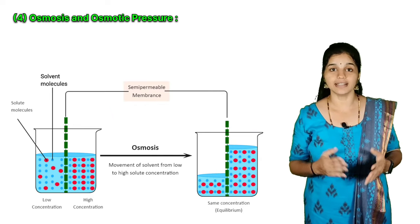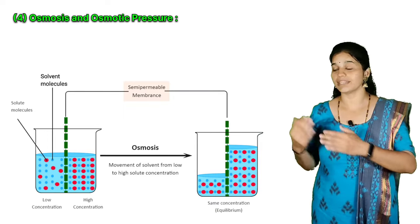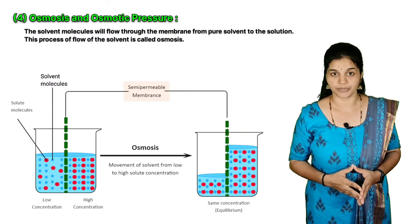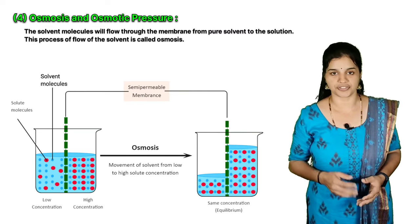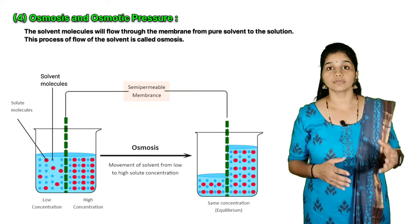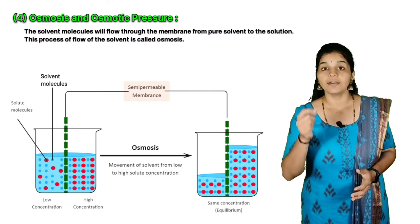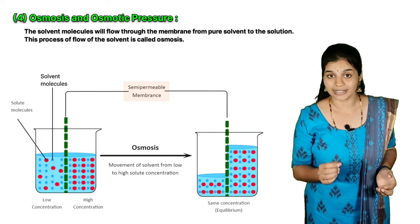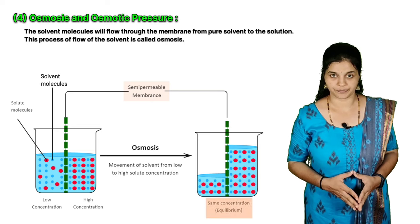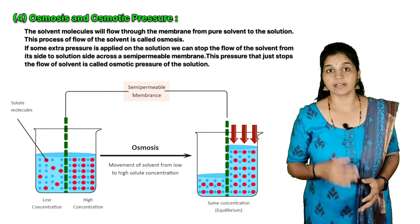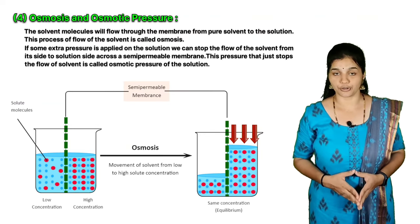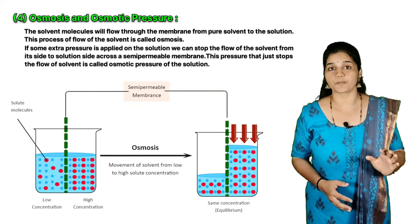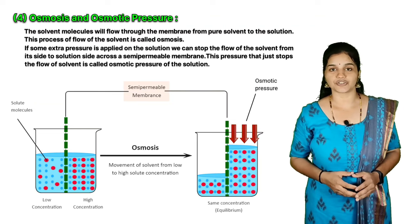Semi-permeable membranes are also known as SPM. If a semi-permeable membrane is placed between pure solvent and a solution, solvent molecules will flow through the membrane from the pure solvent to the solution. This process of flow of solvent is called osmosis. The flow will continue until equilibrium is reached. If some extra pressure is applied on the solution side, we can stop the flow of the solvent across the semi-permeable membrane. The pressure that just stops this flow of solvent is called the osmotic pressure of the solution.